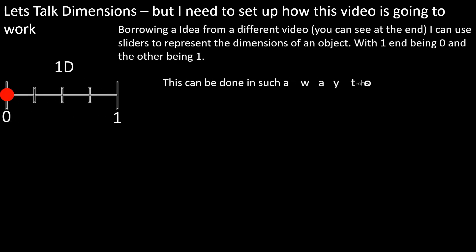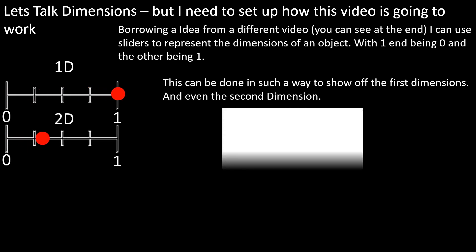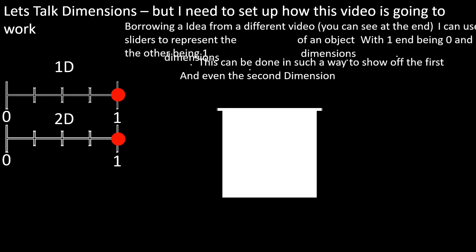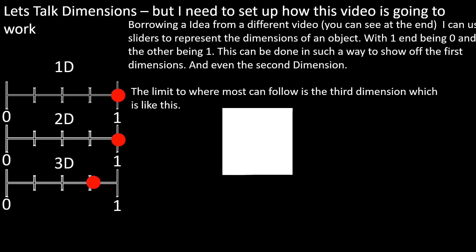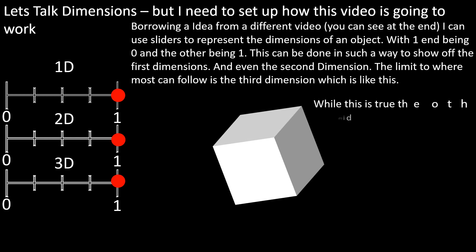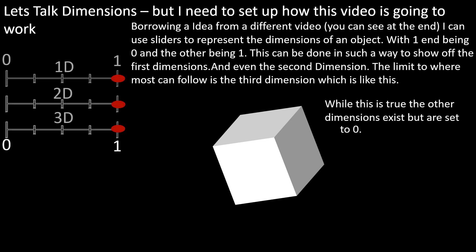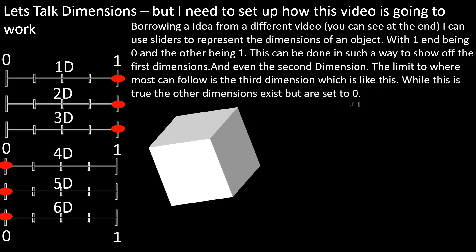This can be done in such a way to show off the first dimension. The limit to where most can follow is the third dimension, which is like this. While this is true, the other dimensions exist but are set to 0. If you were to reduce the 3D axis, the object goes 2D.